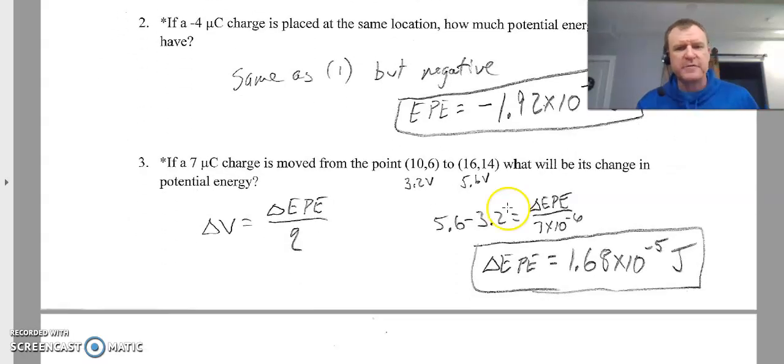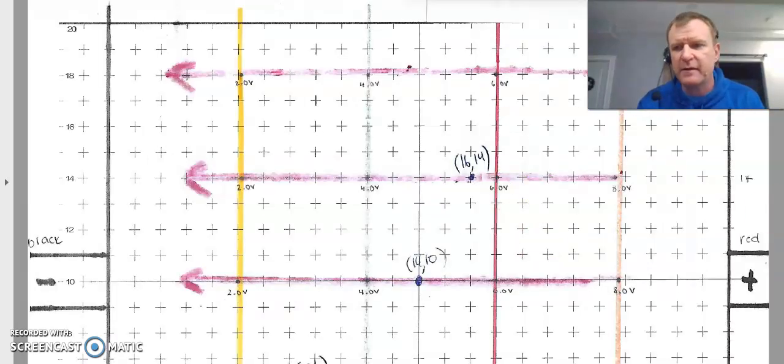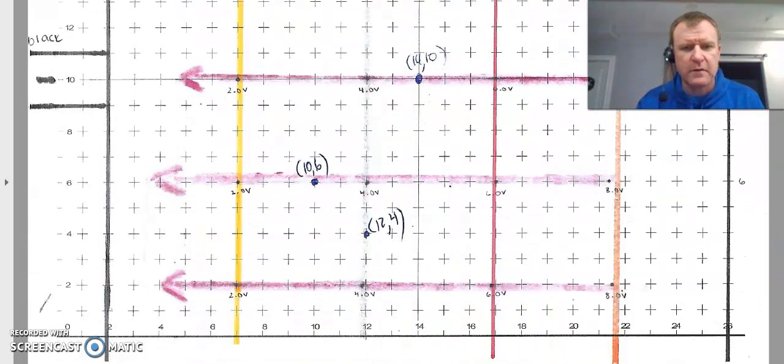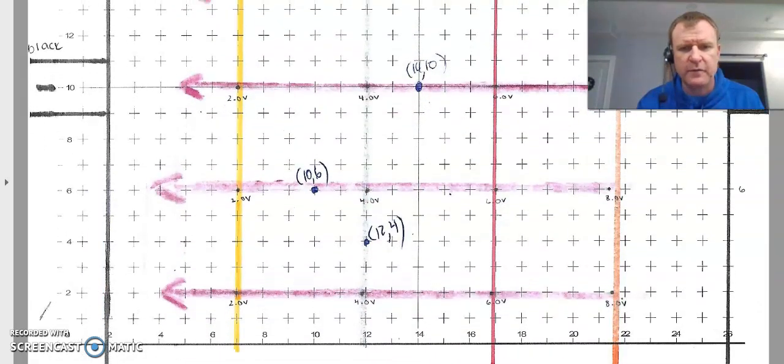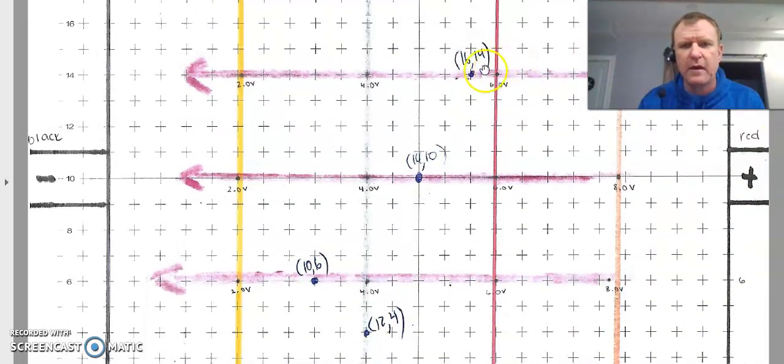7 microcoulomb charge moved from this point to this point. We want to know the change in potential energy. So just looking at equations for change in potential energy, this one is going to fit what we want it to do. Again, I looked at those points on the map, 10,6 and 16,14. You can see I wrote on their map where these values were. So there's 10,6 and then 16,14 would be up here somewhere. So again, I just interpolated the data there to get those values. You guys would have actually measured them.